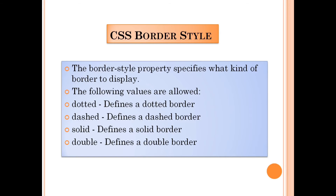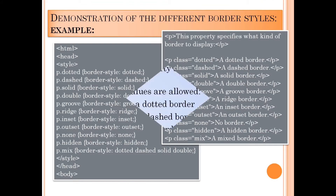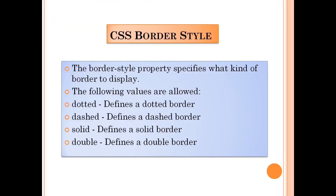We also have groove, ridge, inset, outset, none, and hidden. Groove defines a 3D grooved border and its effect depends on the border color value. Ridge defines a 3D ridged border, also depending on color. Inset defines a 3D inset border, outset defines a 3D outset border — both depend on border color. None defines no border, and hidden defines a hidden border.